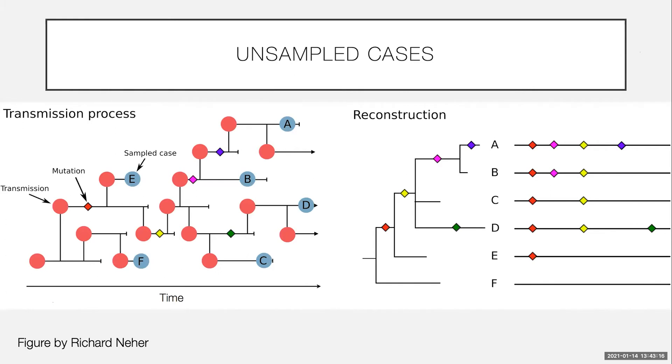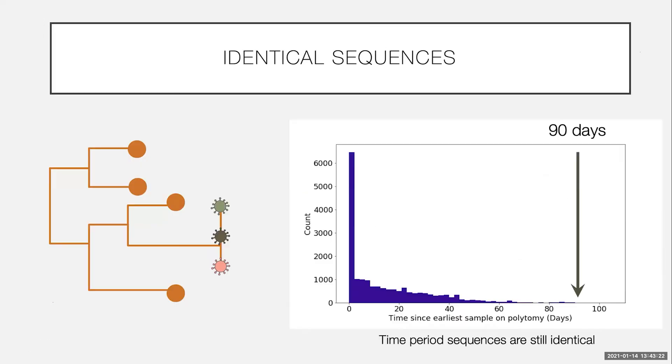And this is why you have to be very careful about inferring transmission from phylogenies. This is complicated in SARS-CoV-2 by this lower mutation rate that I discussed earlier.